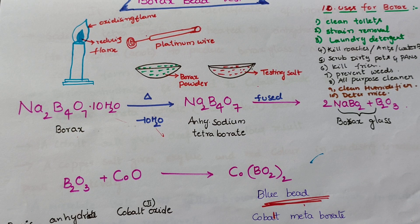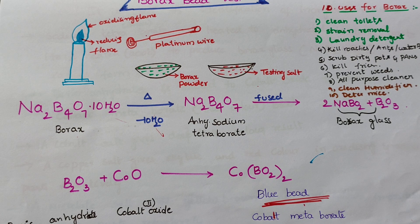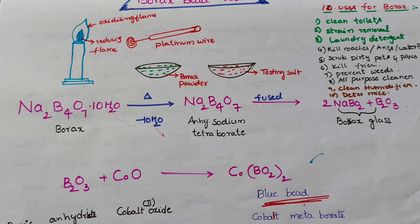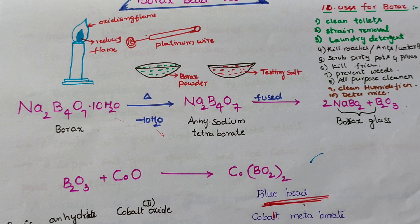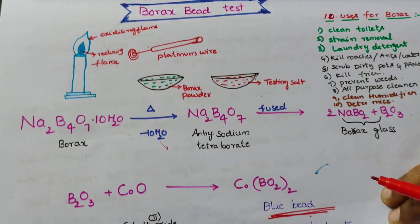An aluminum salt gives a colorless result — it does not give a borax bead. A cobalt salt gives a deep blue color. A copper salt gives sky blue and red color in the oxidizing and reducing parts respectively. A nickel salt gives yellow, brown, and gray color in the oxidizing and reducing parts respectively. Only aluminum does not give a borax bead.